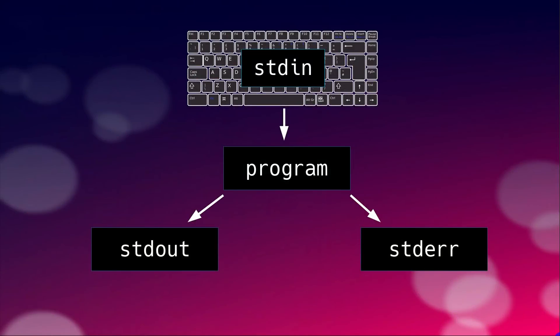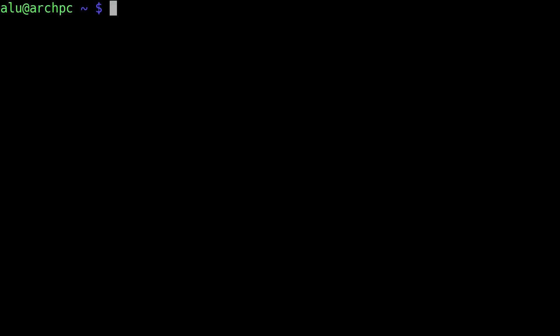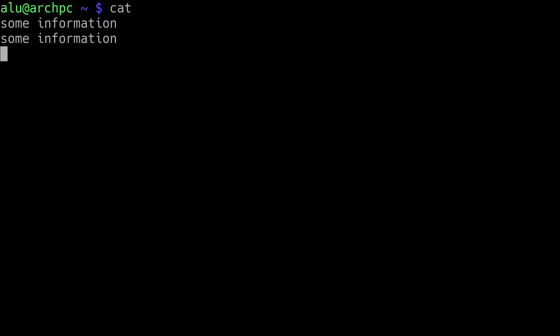Now let's talk about standard input. As mentioned before, this is what you type on your keyboard — but standard input can also be information from a file. In Linux, standard input can be handled by the command cat. You type cat and press Enter, then type any information. When you press Enter, it prints the information on the screen. To exit from the cat command, you press Ctrl+D.